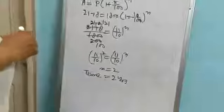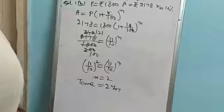So time is equal to 2 years. That is, after 2 years, Rs. 1800 will become 2178 at the rate of 10% per annum.